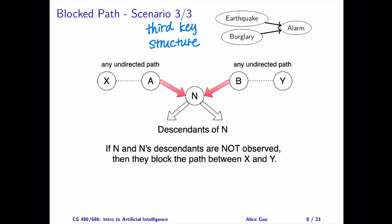Note that this rule is the opposite of the first two rules. The first two rules say that N blocks the path if N is observed. This third rule says that N and its descendants block the path if they are not observed. These three scenarios together define what it means for a path to be blocked.